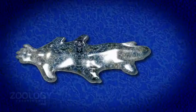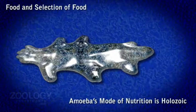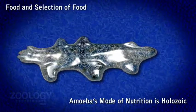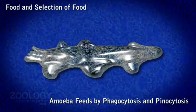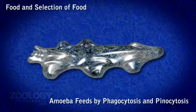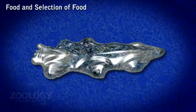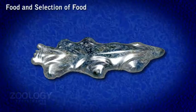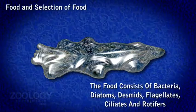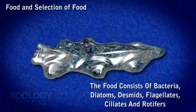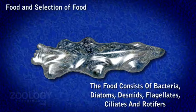Amoeba Proteus is carnivorous and shows holozoic mode of nutrition. The type of feeding is phagocytosis and pinocytosis, a mechanism in which food is engulfed in a solid form. The types of food are bacteria, diatoms, diatoms, flagellates, ciliates, and rotifers.